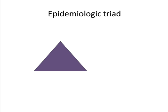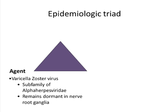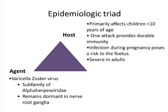Looking at the epidemiologic triad of chickenpox: the causative agent is varicella zoster virus, which belongs to the subfamily alpha-herpesviridae. This virus has a predilection for nerve root ganglia. Once a child acquires the virus, it produces primary and secondary viremia, then remains dormant in the nerve root ganglia. If immune status is later compromised, the virus can reactivate, causing zoster or shingles, which mostly occurs in adults. So chickenpox and zoster are two different host responses to infection by a single agent, varicella zoster virus.